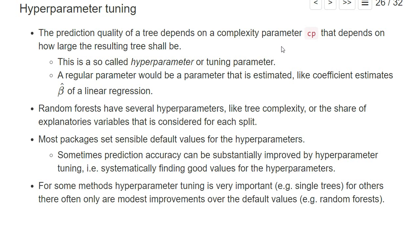Not only regression trees have such parameters. Random forests also have several hyperparameters, like the complexity of each tree or the share of explanatory variables that is considered at each split. There are a lot of hyperparameters, and other machine learning models like LASSO regression and neural networks also have one or many hyperparameters.